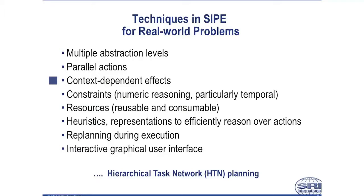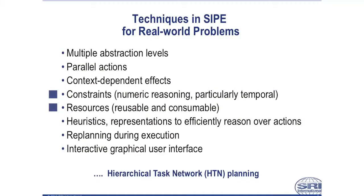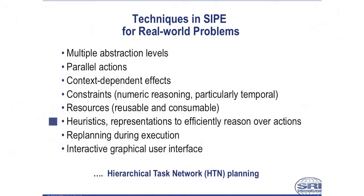Context-dependent effects are ubiquitous in real-world problems. For example, if you move an object to a new location, all the objects attached to it or on top of it will move with it. SIPE would deduce these context-dependent effects, whereas in a STRIPS-style planner, you would generally need a different operator for every possible combination of things that might be attached to or on the block. The next two items, constraints and resources, come from the fact that reasoning about numbers is essential to almost every realistic domain. Time is certainly a key element in most plans. Resources also have a specific capacity or must be accumulated in certain quantities. An example of a goal of accumulation is obtaining the boom in the previous example — the planner had to plan to obtain enough boom to surround the island and reason about numbers to do that. SIPE developed heuristics and representations to efficiently reason about actions.